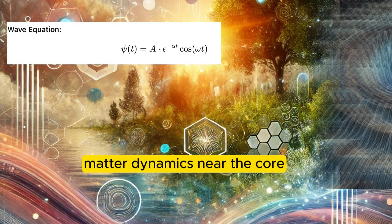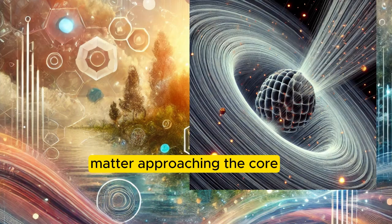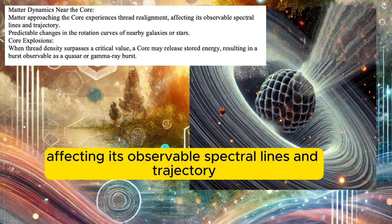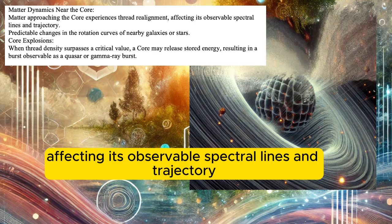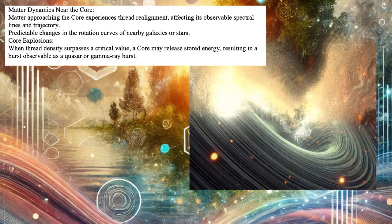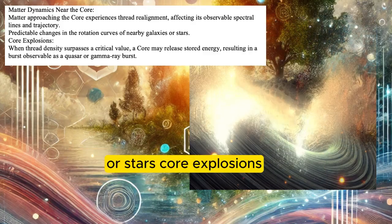Matter dynamics near the core. Matter approaching the core experiences thread realignment, affecting its observable spectral lines and trajectory. Predictable changes in the rotation curves of nearby galaxies or stars.